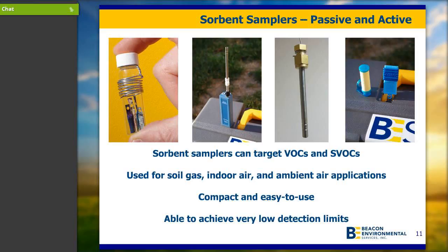For indoor air applications in the passive mode, we recommend using the stainless steel tube, which is the gold standard for passive sorbent samplers for measuring concentrations in indoor air. With these sorbent samplers, you're able to achieve lower detection limits in the parts-per-trillion range because you can control the volume of air pulled across the sorbent tube or the length of time it's exposed.